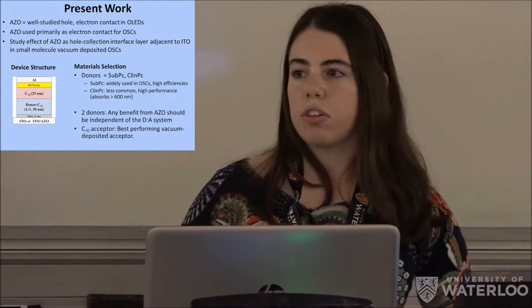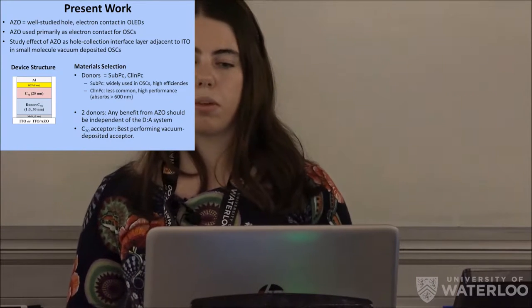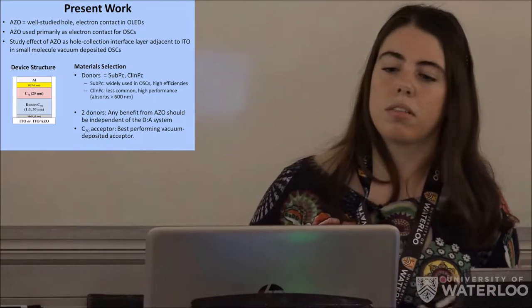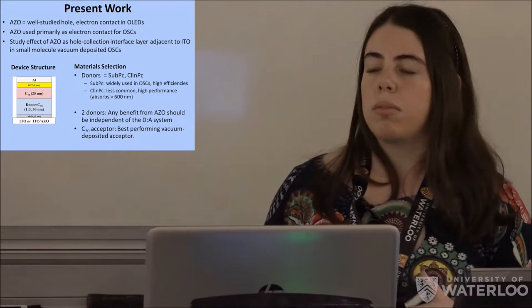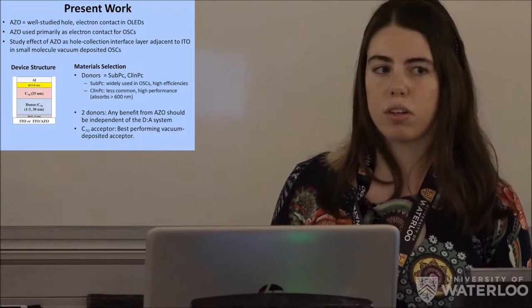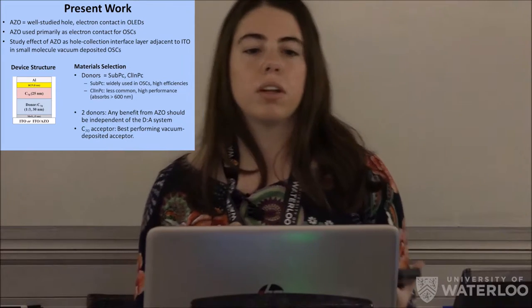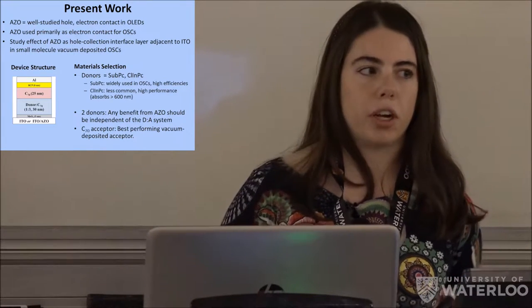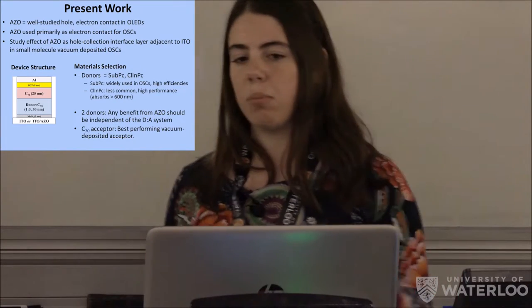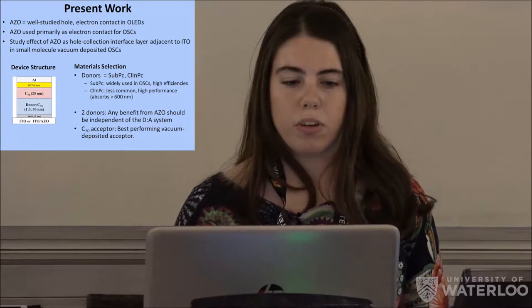So these organic solar cells use the donor-acceptor couples of boron-subphthalocyanine chloride and C70, and chloroindium-phthalocyanine chloride with C70. So sub-PC is boron-subphthalocyanine, and it's very widely used in organic solar cells, and it's well recognized for its high efficiency. Chloroindium is less common, but it is a very high performance material, because it actually absorbs in the near-infrared, and most organics actually don't do this. So that's why these two materials.